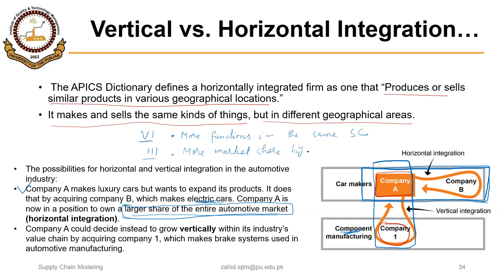By expanding product variety — as we saw in this case — the company gains more market share. A company could decide to grow vertically within its industry's value chain, so vertical integration stays in the same supply chain. But if it acquires or constructs a new organization — company B — that makes different types of cars, that would be horizontal integration. Horizontal integration is the expansion of the firm at the same level: the company was a manufacturer of cars and still is, but now it manufactures different types of cars.